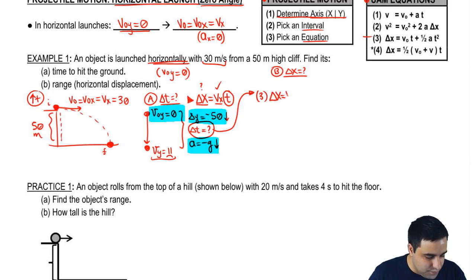Delta x equals v0 t plus half of a t squared. This is sort of the original version of the equation, but we're talking about the y-axis. So I'm going to change this into delta y. And so this becomes the initial velocity of the y-axis, which is actually zero. So this whole thing is gone. Plus half the acceleration of the y-axis is negative g.